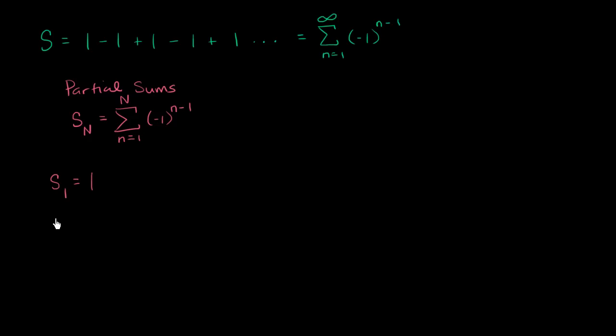The S sub 2, S sub 2 is going to be equal to 1 minus 1. It's going to be the sum of the first two terms. S sub 3, S sub 3 is going to be 1 minus 1 plus 1. It's the sum of the first three terms, which is of course equal to,